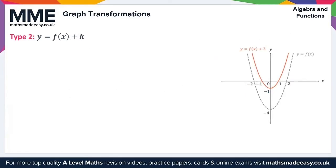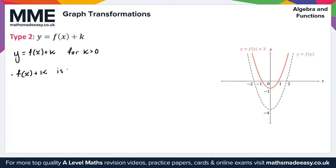Moving on to Type 2, which is of the form y equals f of x plus k. For the transformation y equals f of x plus k with k greater than 0, f of x plus k is f of x moved k units upwards.